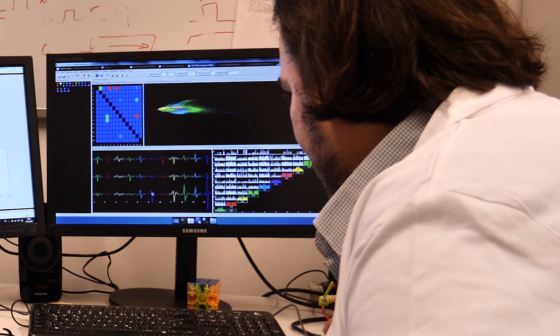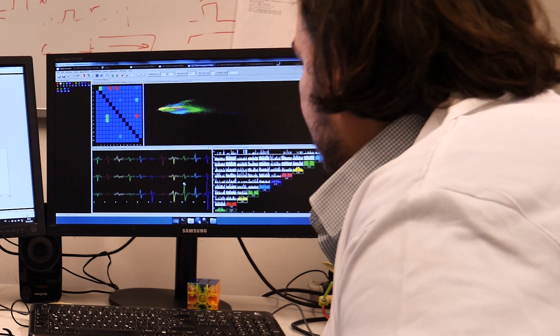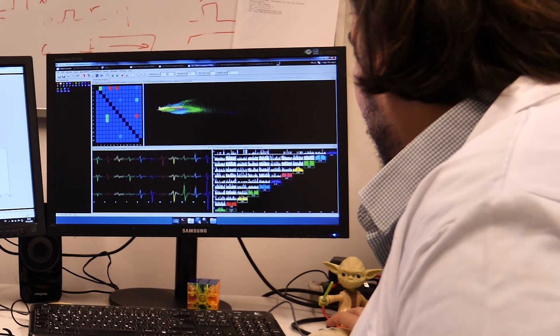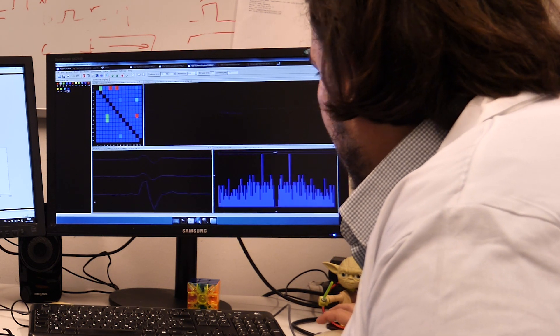This belongs to a neuron, this belongs to another neuron, this belongs to another neuron. And therefore from there we can try to relate this activity of the individual neurons or the population as we wish with the behavior and with the specific cognitive processes that we are studying.